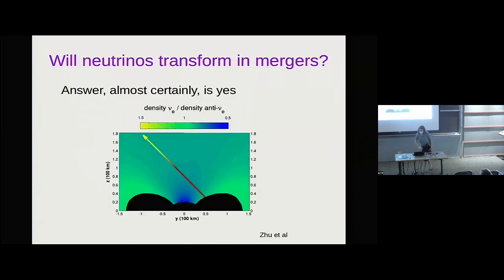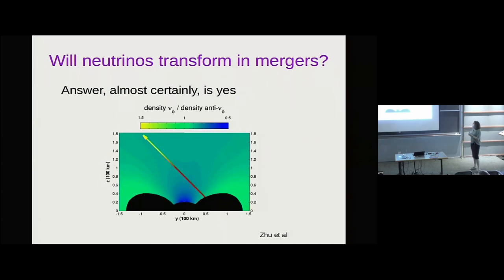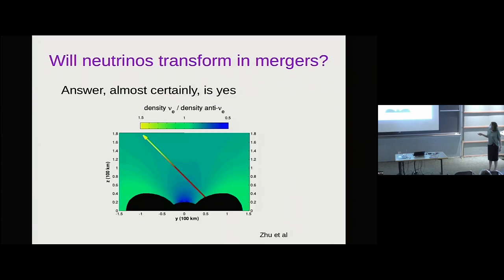The next question is: does flavor transformation actually happen? The whole community agrees that yes, this does happen. You can argue about exactly how, but I don't know anybody suggesting that the neutrinos do not oscillate in mergers. Here's an example — you have a hypermassive neutron star and accretion disk, and here's a neutrino launched at some angle. It starts off as an electron neutrino (red) and then converts somewhere and becomes a muon neutrino. One of our jobs is to figure out what is going on there.